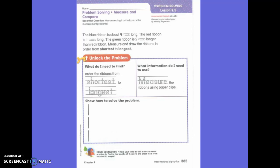The blue ribbon is about four paperclips long. The red ribbon is one paperclip long. The green ribbon is two paperclips longer than red ribbon. Measure and draw the ribbons in order from shortest to longest.